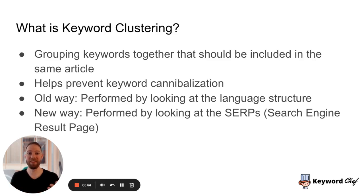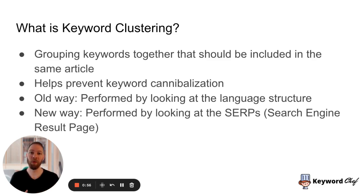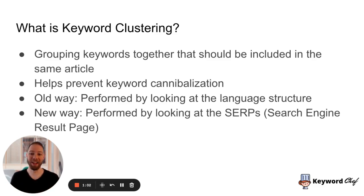This is important to help prevent what's called keyword cannibalization. Keyword cannibalization is basically when you write two articles about two different keywords but those keywords are very similar — Google might only rank one of those articles. While this is not a Google penalty, it will be a wasted effort, so you want to prevent that.